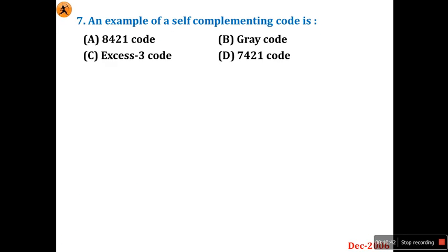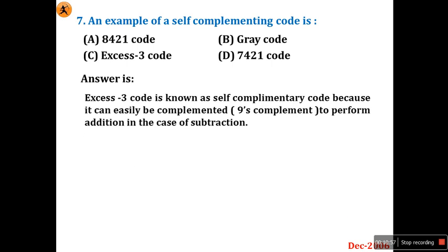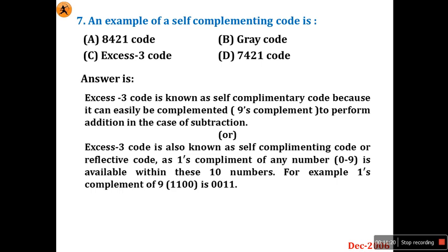Next we'll go for: an example of a self-complementing code is 8421 code, gray code, XS3 code, or 7421 code? Self-complementary code — it is a property — the direct answer is XS3 code. XS3 code is known as self-complementary code because it can easily be complemented up to 9's complement to perform addition in the case of subtraction. We can perform up to 9's complement once complete and get all the values of one's complement. So the self-complementing code is also known as a reflective code as the one's complement of any number is available within the 10 numbers. Option C is the right answer.